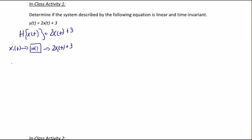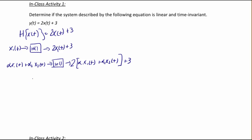What if we have an input alpha_1 x1(t) plus alpha_2 x2(t)? If it goes through my function h, then the output should be 2 times the input plus 3, so that's 2 times the quantity alpha_1 x1(t) plus alpha_2 x2(t), plus 3. We call this z1(t). Now, for x2(t) sent through the function, the output would be 2x2(t) + 3.